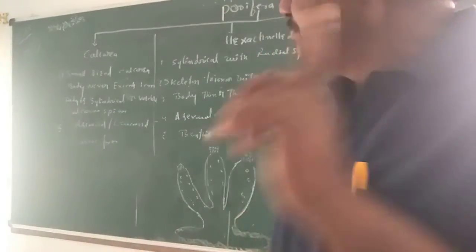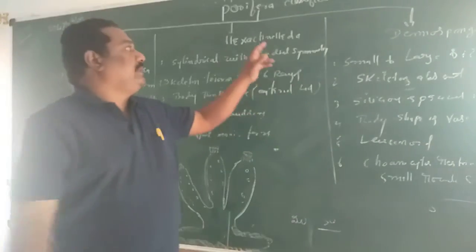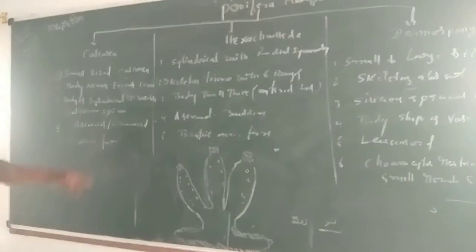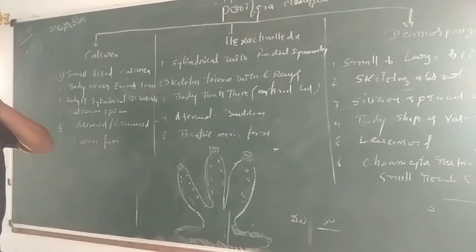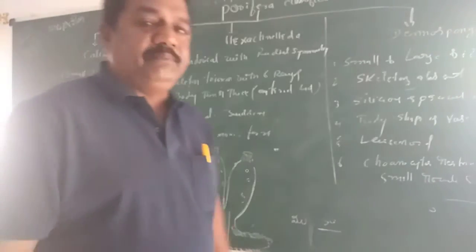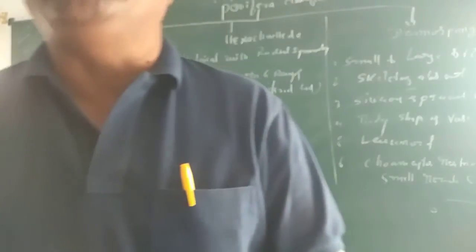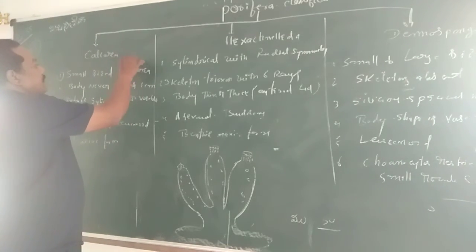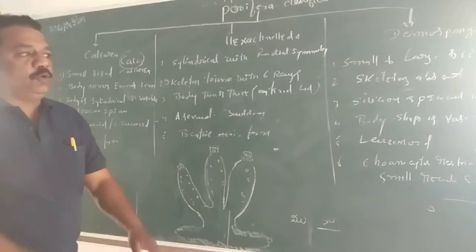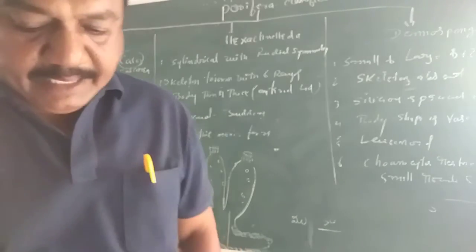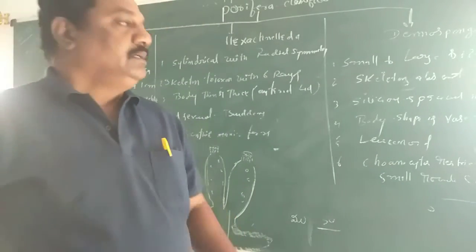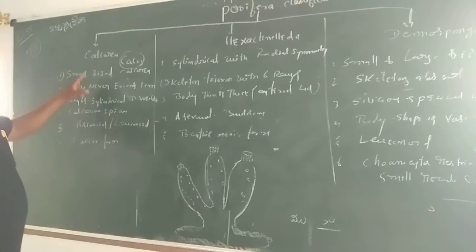The three categories are: number one, Calcarea; number two, Hexactinellida; number three, Demospongiae. In Calcarea, the spicules — and therefore the skeleton system — are made by calcium carbonate substance. Such groups of animals are included in Calcarea. So the endoskeleton system is made by calcium carbonate, and such groups of Porifera are included in Calcarea.